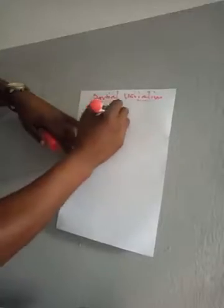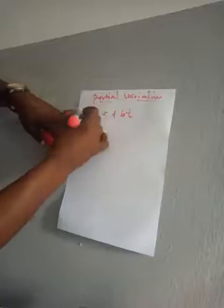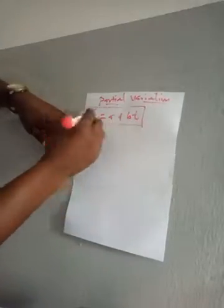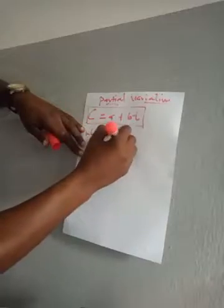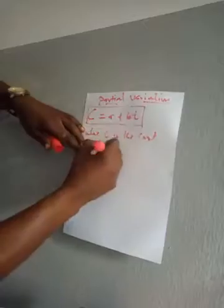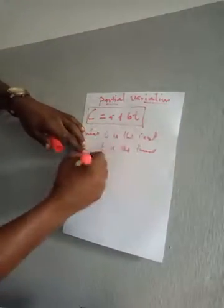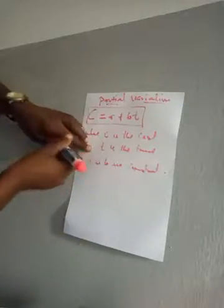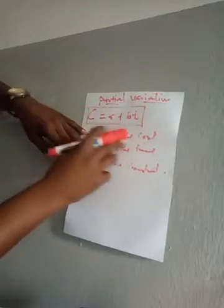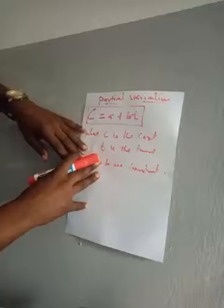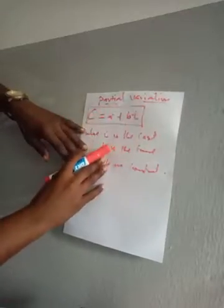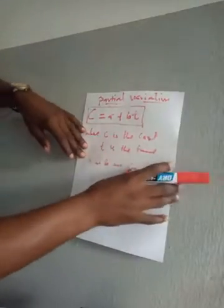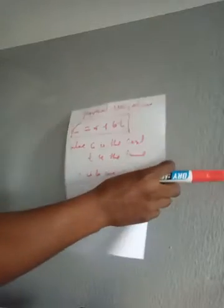The cost is partly constant and partly varies with the amount of time taken. In algebraic form we write it as: c is equal to a plus bt. This is the algebraic form of partial variation. Here c is the cost, t is the time, and a and b are constants. While c is the cost of making the clothes, t the time varies — that is why t partly varies.